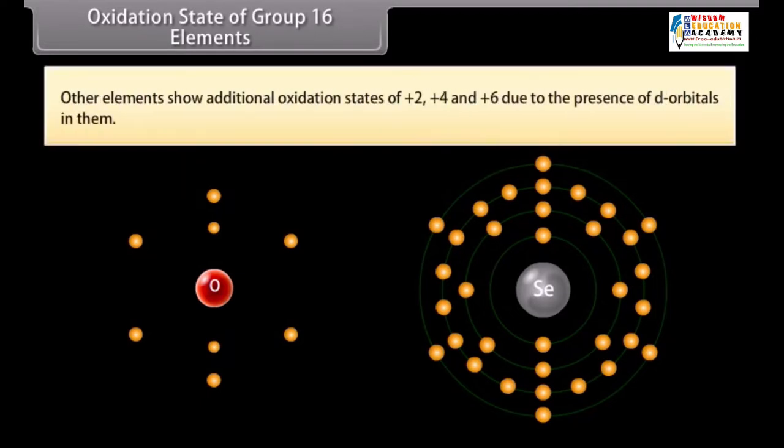Other elements show additional oxidation states of plus 2, plus 4 and plus 6 due to the presence of d-orbitals in them.